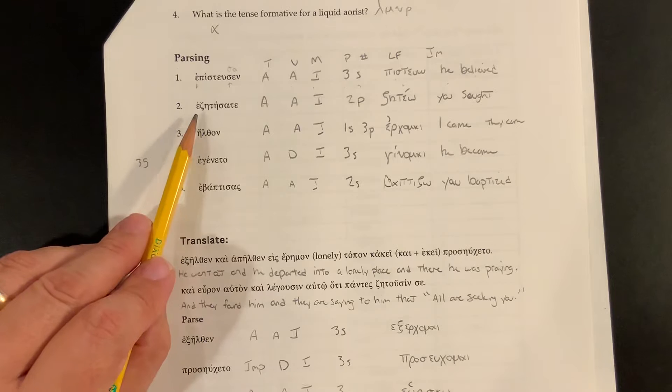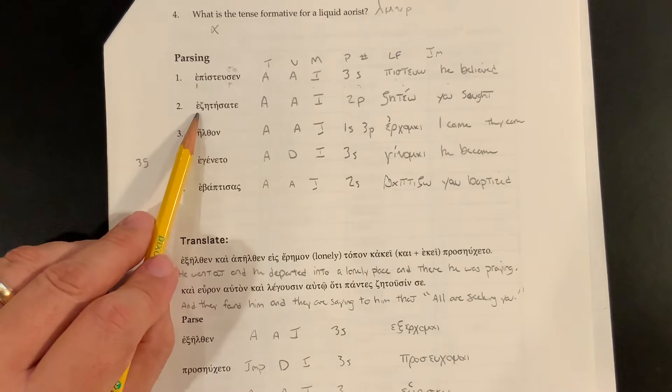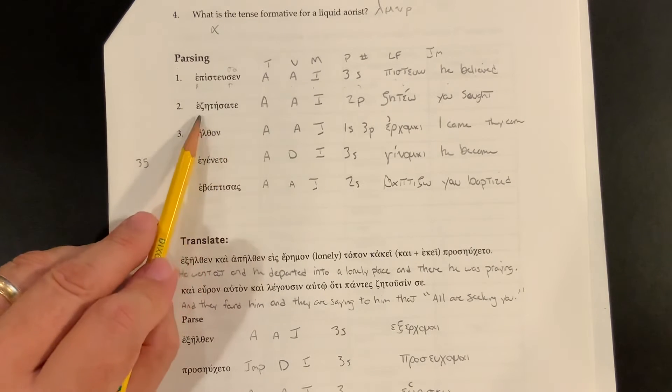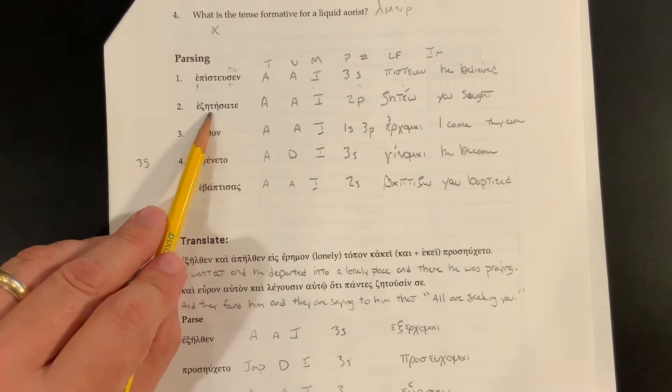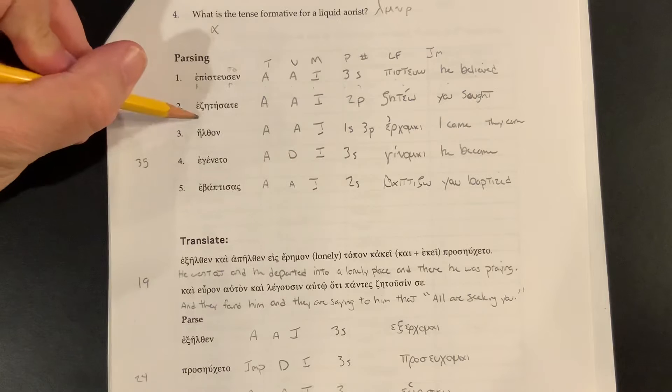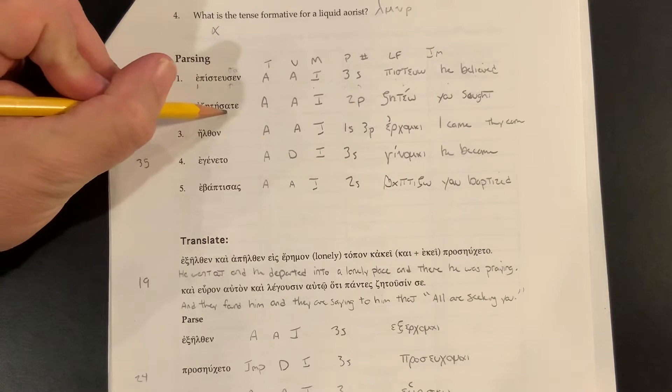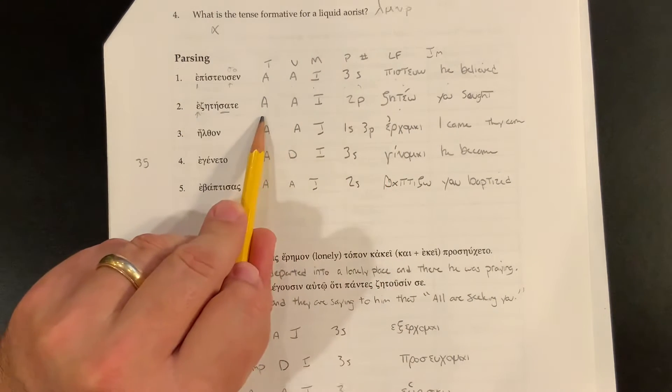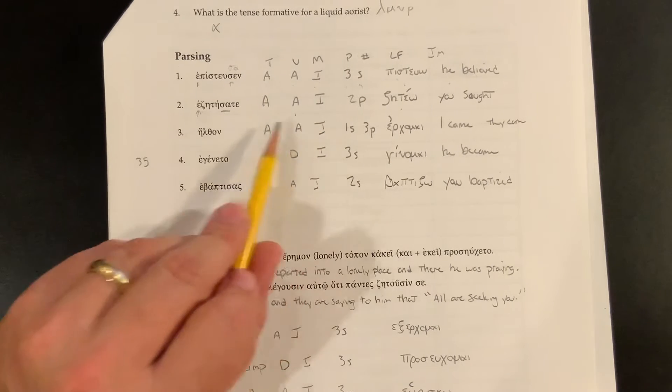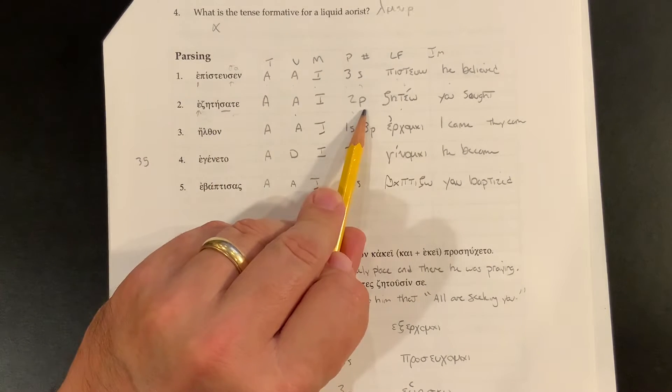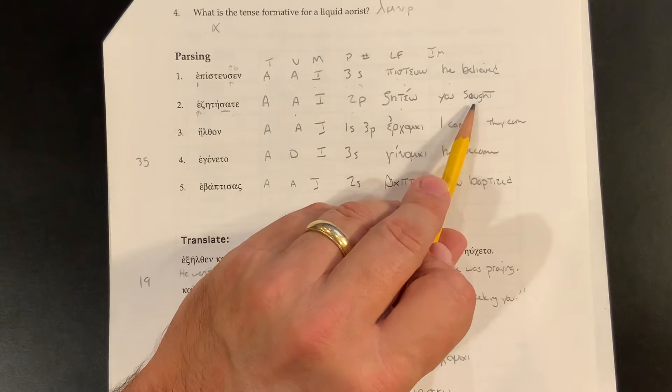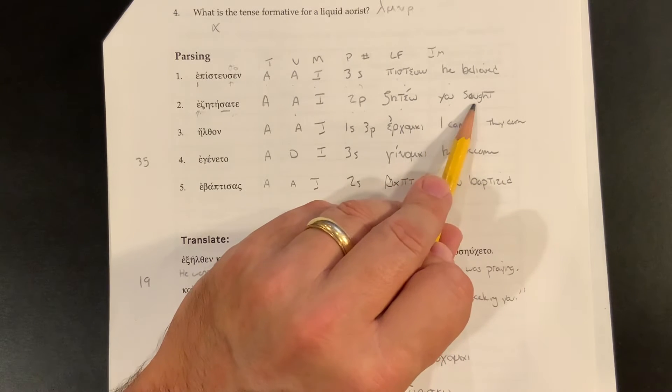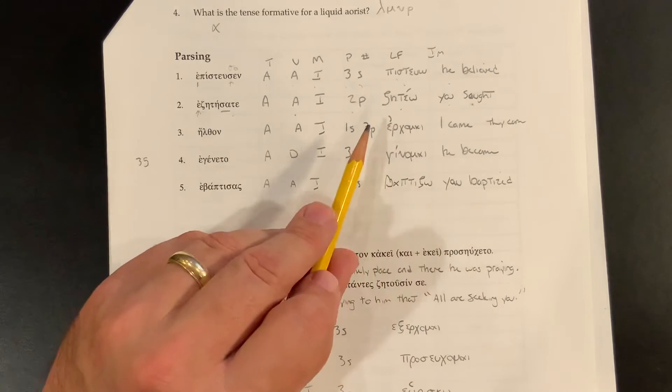Alright, number two. Number two, edzetesate. Edzetesate. This looks like zeteo. Zeteo. We're going to see an augment on there. Sigma alpha tense formative, which tells me that we've got an Aorist. So zeteo. We've got an Aorist, active, indicative. That te tells me it's a second plural. You all, you can't say seeked. They sought. You sought. You sought. Y'all sought. Second person plural. Okay, there we go.